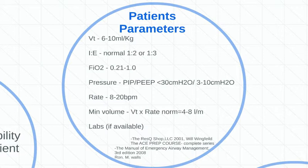Now I:E ratios — inspiratory to expiratory ratios. We can't really directly affect those with this ParaPAC ventilator. What we can affect is rate, which in turn affects I:E ratios. The normal I:E ratio is one to two or one to three — just keep that in the back of your mind. The higher the rate, the lower the I:E ratio. That's just the way it is.